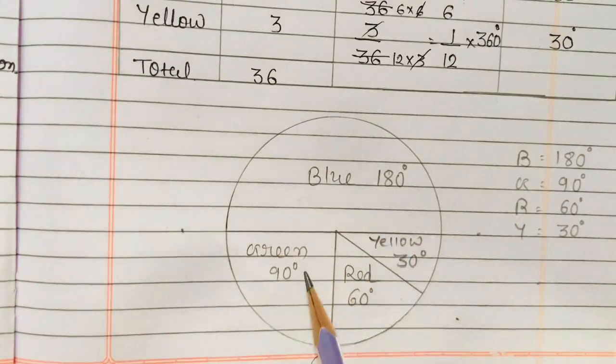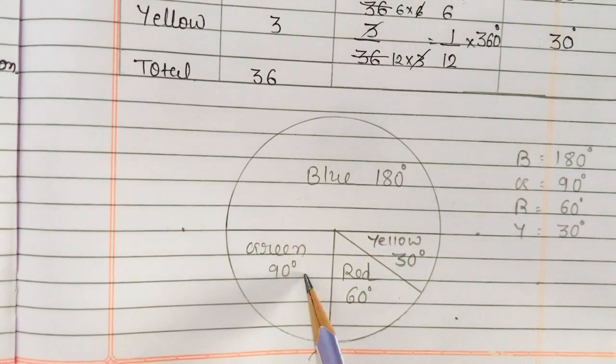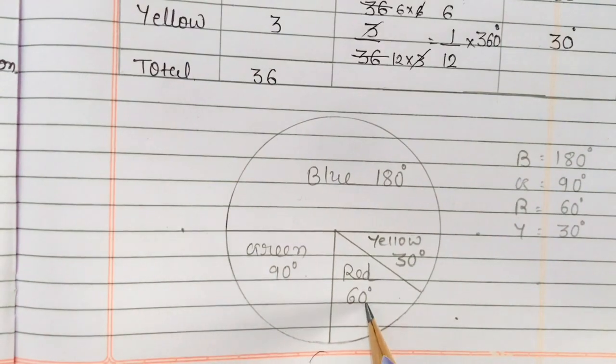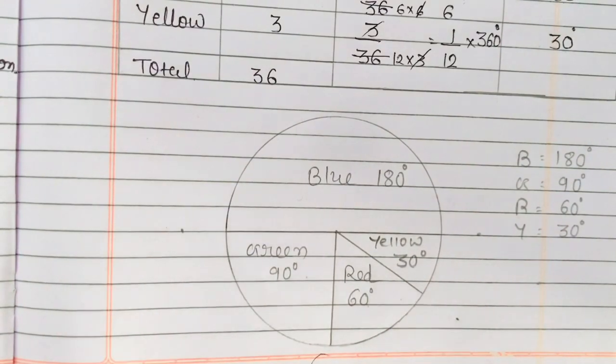Blue — 180 degrees. Green — 90 degrees. Red — 60 degrees. And yellow is 30 degrees. So this was question number 3.